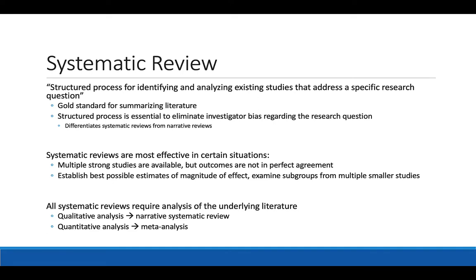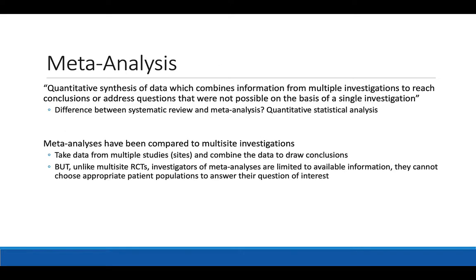All systematic reviews require an analysis of the underlying literature. This can be qualitative, where you describe what was found, or quantitative, where you combine results and perform a new statistical analysis. Systematic reviews using qualitative analyses alone are called narrative systematic reviews. Systematic reviews that include an additional quantitative analysis — new statistics — are called meta-analyses. A meta-analysis is essentially a systematic review plus more statistics.